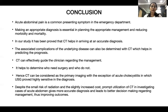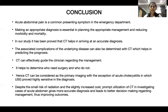Conclusion: in our study, it has been proved that CT helps in arriving at an accurate diagnosis. Associated complications can be determined with CT, and CT can effectively guide the clinician regarding management — helping to determine who needs surgery and who does not. Hence, CT can be considered the primary imaging modality in non-traumatic acute abdomen. Despite the small risk of radiation and slightly increased cost, prompt utilization of CT leads to more accurate diagnosis, better decision-making in management, and improved patient outcomes.